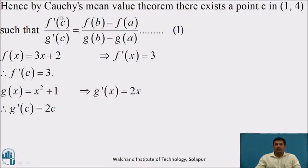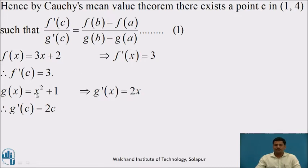To find f'(c), substitute x = c on both sides. We get f'(c) = 3. Also, g(x) = x² + 1. Differentiating with respect to x, we get g'(x) = 2x, since the derivative of x² is 2x and the derivative of 1 is 0. To find g'(c), substitute x = c, giving g'(c) = 2c.